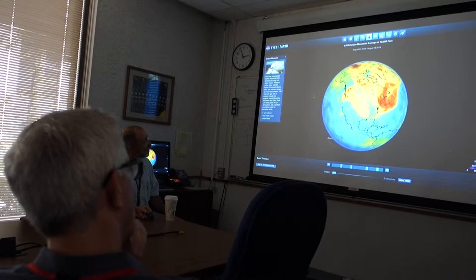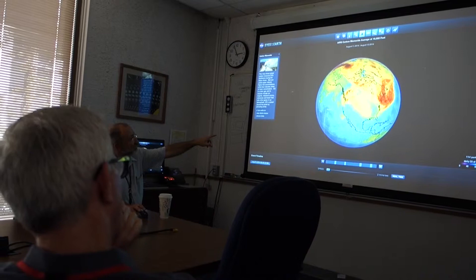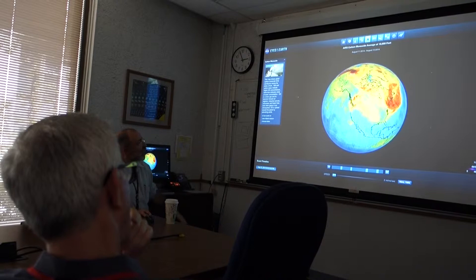So for example, over Southern California right now, we're pretty good. We're down here in the blue, you know, 90 parts per billion. They're having fires up in Washington. So they're up in the red and they're up in the orange zone here.